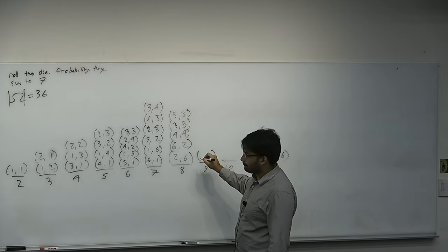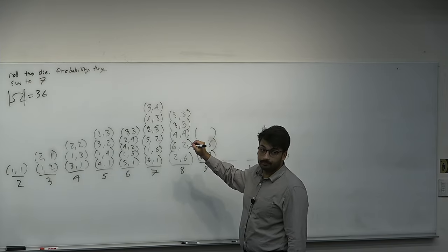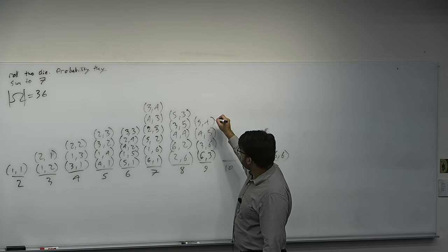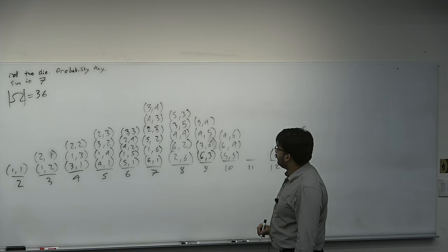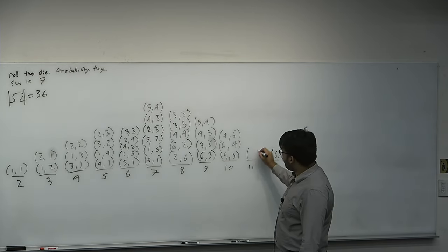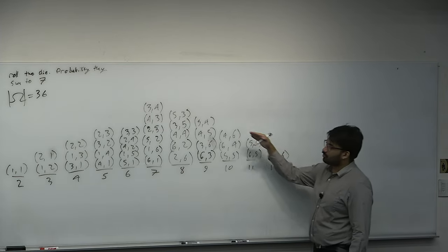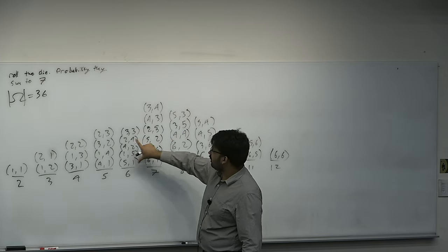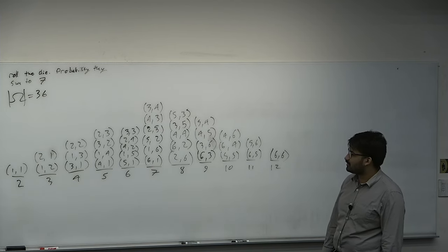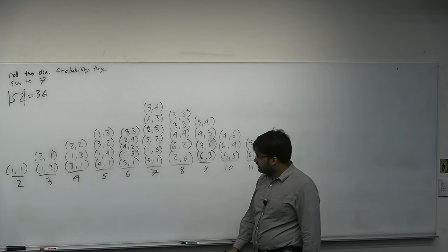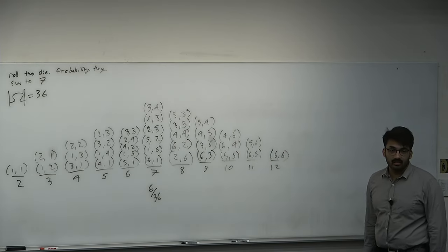Sum to 9: (6,3), (3,6), (4,5), (5,4). Sum to 10: (5,5), (6,4), (4,6). Sum to 11: (6,5) and (5,6) — only two ways. Notice that the count goes up and then comes back down. So what is the probability you roll two dice that sum to 7? 6 out of 36, which is just 1/6.